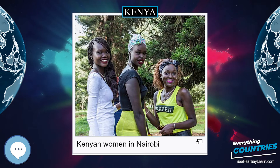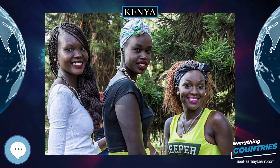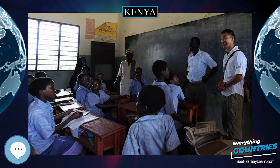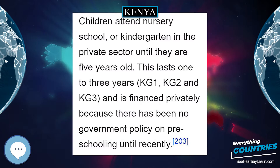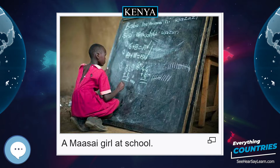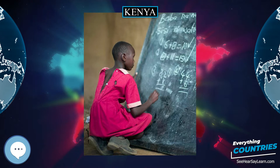Homosexual acts are illegal in Kenya and punishable by up to 14 years in prison, though the state often turns a blind eye on prosecuting homosexuals. According to a 2013 survey by the Pew Research Center, 90 percent of Kenyans believe that homosexuality should not be accepted by society. While addressing a joint press conference together with President Barack Obama in 2015, President Kenyatta declined to assure Kenya's commitment to gay rights, saying that 'the issue of gay rights is really a non-issue, but there are some things that we must admit we don't share — our culture, our societies don't accept.'